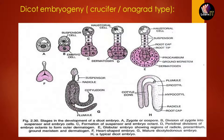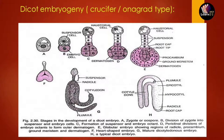Finally, the embryo takes on the typical dicot embryo shape. A typical dicot embryo consists of an embryonal axis and two cotyledons. The part of the embryonal axis above the level of cotyledons is called the epicotyl, and it ends with the stem tip called the plumule, which gives rise to the future shoot of the plant. The part below the cotyledons is called the hypocotyl, which terminates in the root tip called the radicle, giving rise to the future root with the root cap.